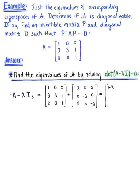Row 1: 1 minus lambda, 0, 0. Row 2: 3, 3 minus lambda, 1. Row 3: 8, 0, 1 minus lambda.